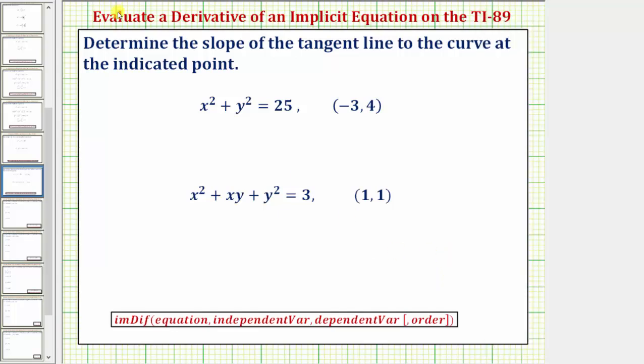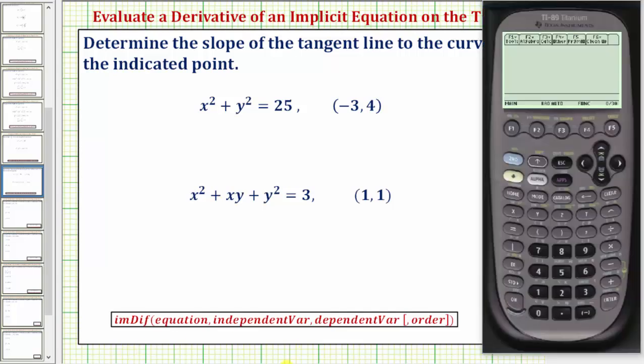Welcome to a tutorial on how to evaluate a derivative of an implicit equation on the TI-89 graphing calculator. Here we're asked to determine the slope of the tangent line to the curve at the indicated point. We'll be using the implicit differentiation function located under the calculus menu in order to answer these questions.